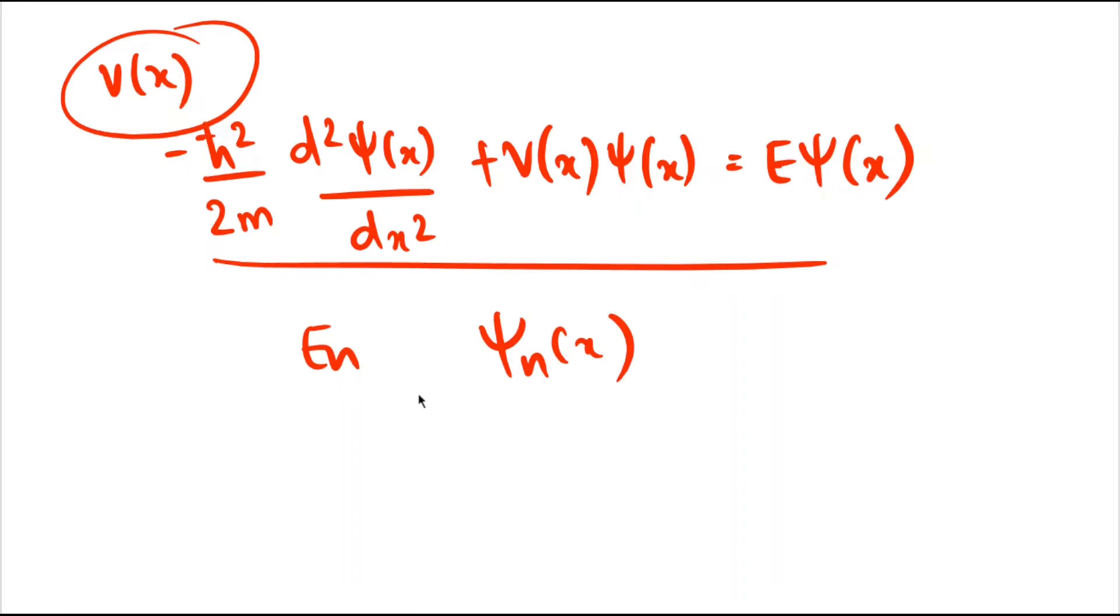We can apply this Schrödinger equation to various one-dimensional potentials. Some of them are the free particle, where your potential V(x) is zero and the particle is moving under no influence of any potential.